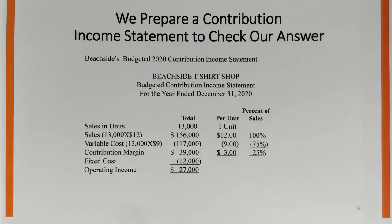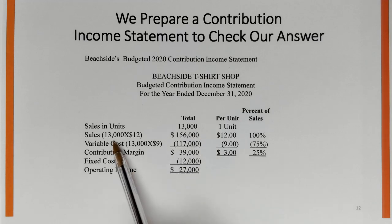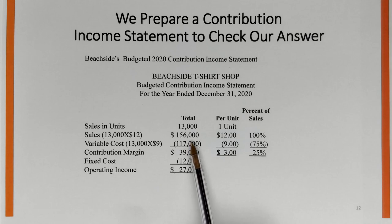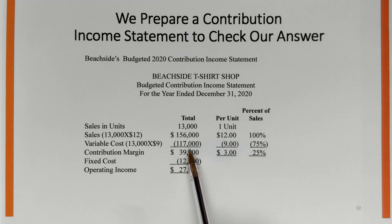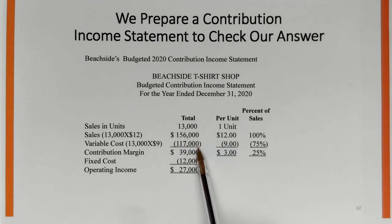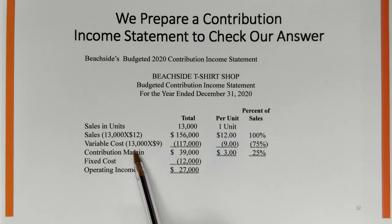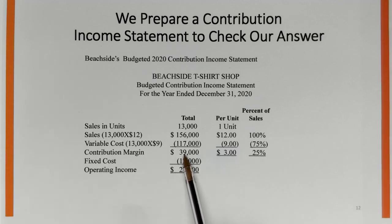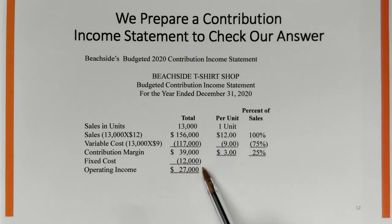Let's check our answer with a contribution approach income statement. At 13,000 units, sales are 13,000 × $12 = $156,000. Variable cost is 13,000 × $9 = $117,000, or $156,000 × 75%. Contribution margin is $156,000 × 25%, or 13,000 × $3 = $39,000. Less fixed cost of $12,000 gives profit of $27,000. Confirmed.